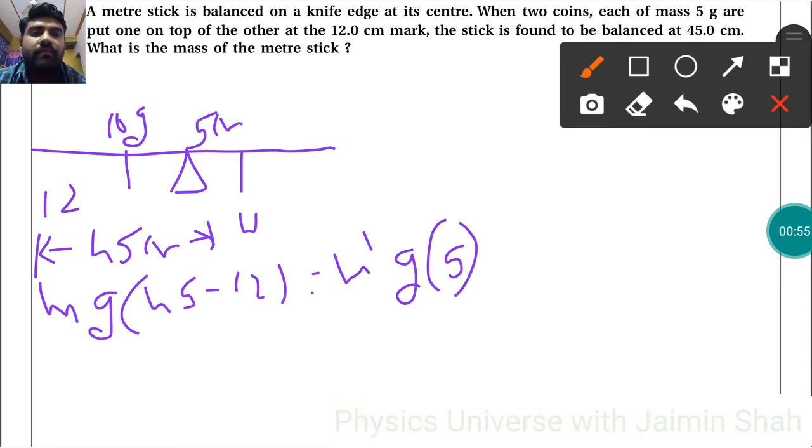So M dash is equal to M into G, which is 10 into 33 upon 5. So that will be approximately 330 upon 5.